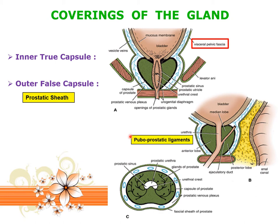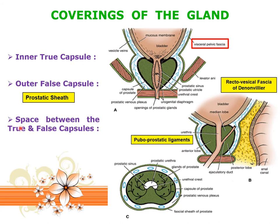The puboprostatic ligaments extend between the pubic symphysis and the false capsule of the prostate gland. Posteriorly, the sheath is related to an embryonic fascia called the rectovesical fascia of Denonvilliers, which does not have much significance. The space between the true and false capsules is filled by the prostatic venous plexus, which above continues with the vesical venous plexus, as the urinary bladder and prostate gland are enclosed within a single compartment by pelvic fascia.